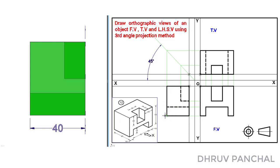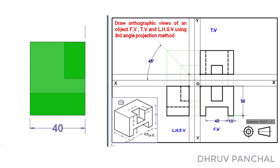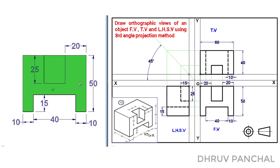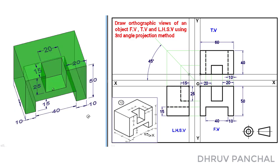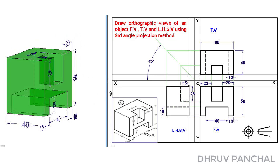Our left hand side view is now completed. Let me show you the dimensions of the left hand side view so that you can draw it very easily. Also mention the name of the view, which is left hand side view. Now mention the dimensions in each view as per the dimensioning rule. I hope you understood it. If you have any questions, let me know in the comment box. Thank you.